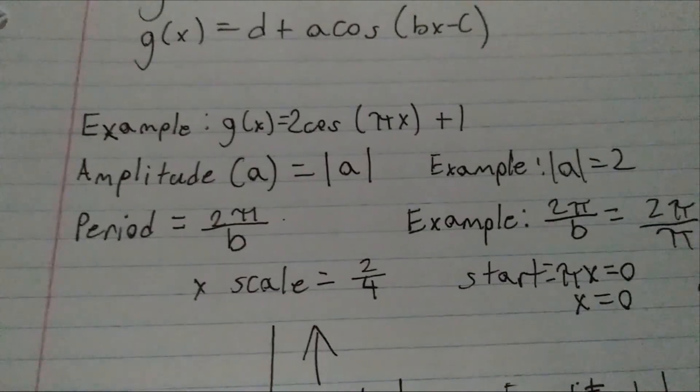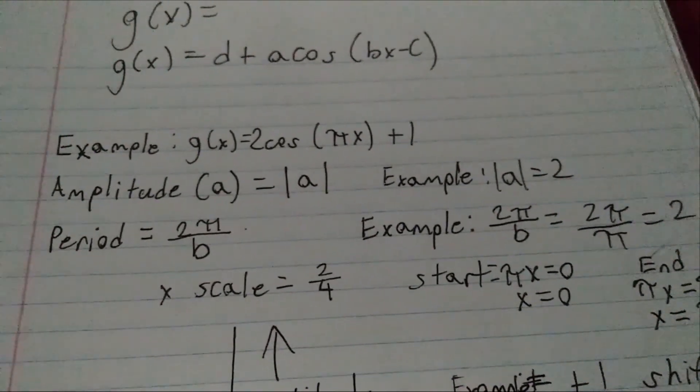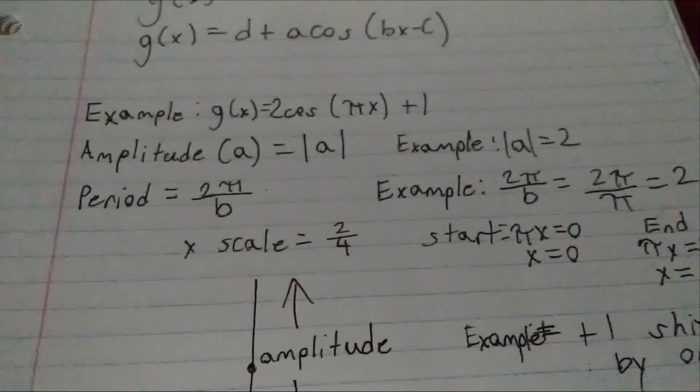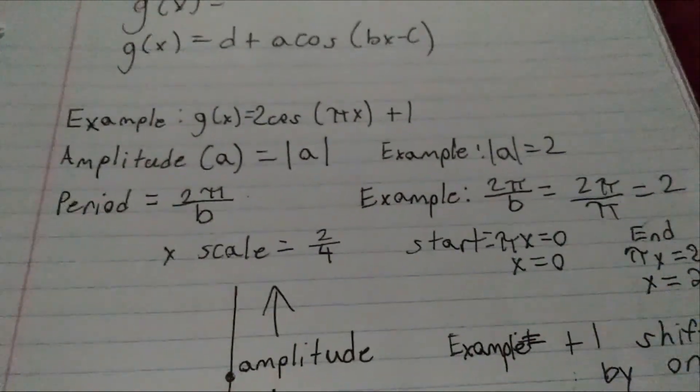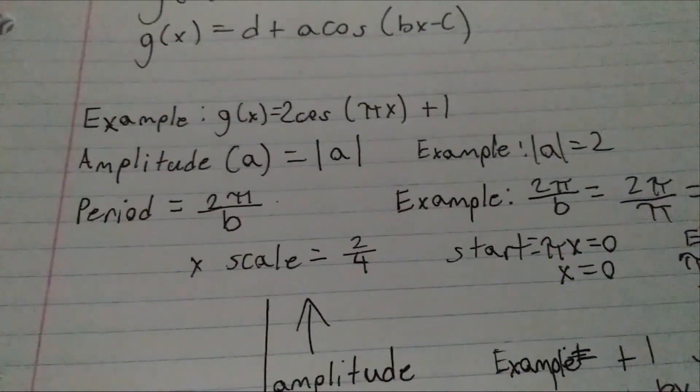So, as an example, we have g(x) equals 2 cos pi x plus 1. The amplitude is going to be what a is. It's always the exact number. So, in this example, 2 is the amplitude.